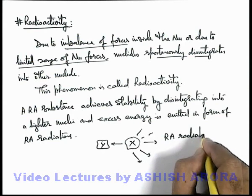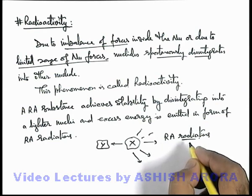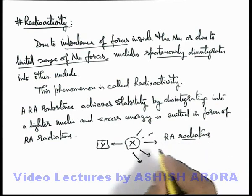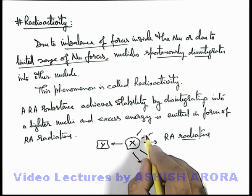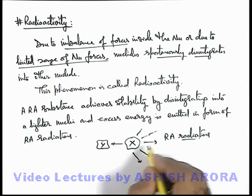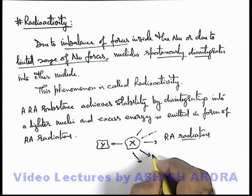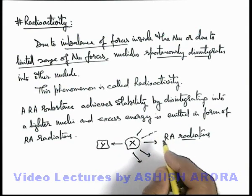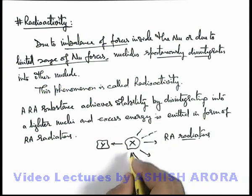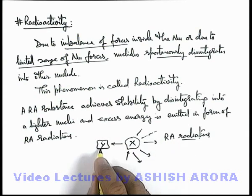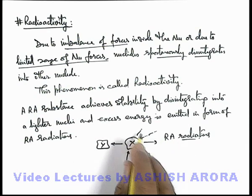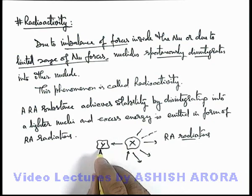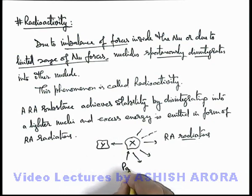These radioactive radiations carry different forms of energies — in the form of electromagnetic radiations as well as kinetic energy of other small nuclei and particles. If the nucleus X is splitting into radioactive radiations and other smaller nuclei, this is called the parent nucleus.